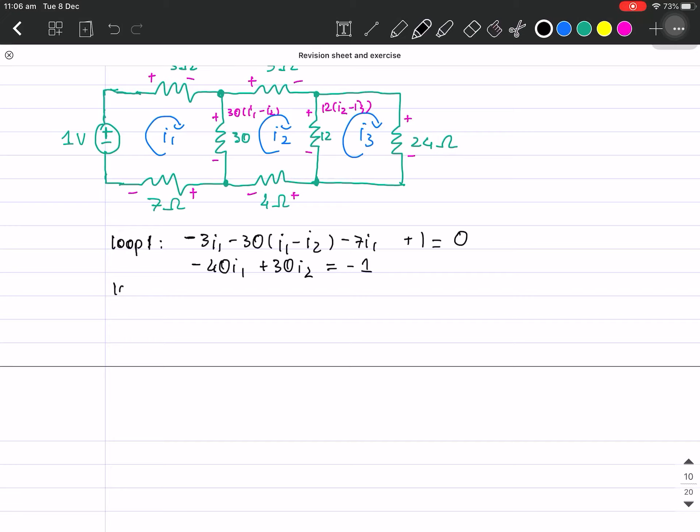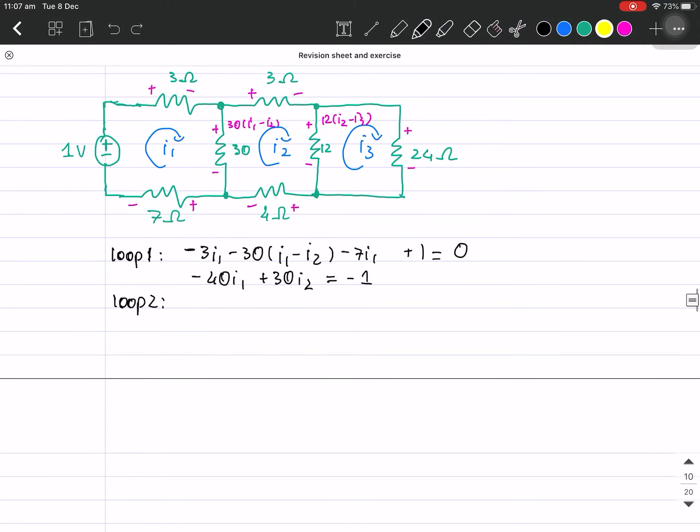My second loop, I'm gonna start from this stretch. My second loop is now going to be 30(i1 - i2) minus 3i2 minus 12(i2 - i3). Is equal to... oh wait wait wait, minus 4i2 is equal to 0.